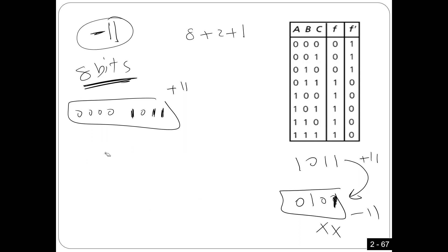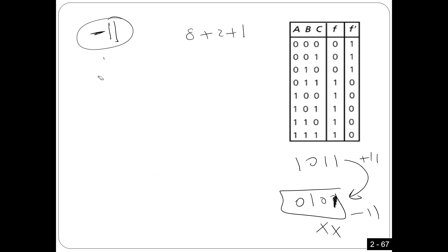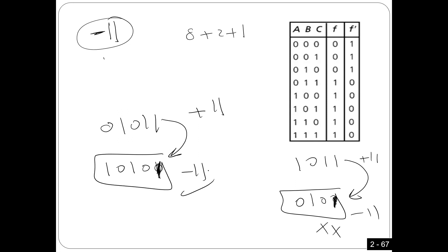Why is starting from four bits wrong? In four bits, the most negative number you can represent is negative 2 to the power of 3, which is negative 8. You want to represent negative 11, but four bits can only go to negative 8 — not enough. At least five bits are required. If you start from five bits — 01011, flip to 10100, add one giving 10101, that's negative 11 in five bits. You can then extend to eight bits by adding ones: 11110101.